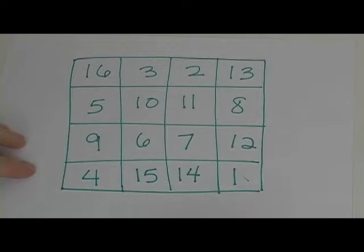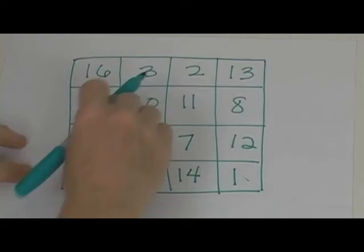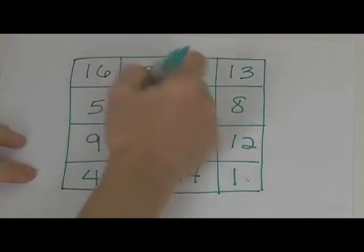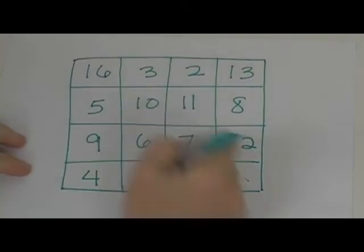So how is this a game? Well once you have this you can block out certain numbers and see if you can figure out what those would have to be in order to make this true.